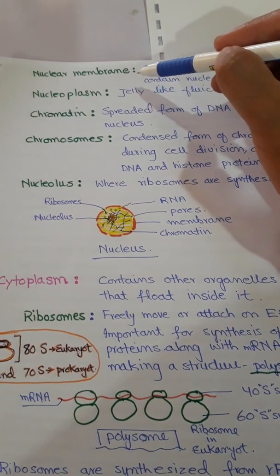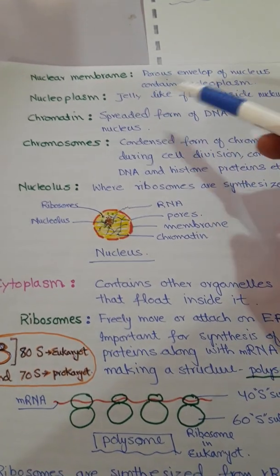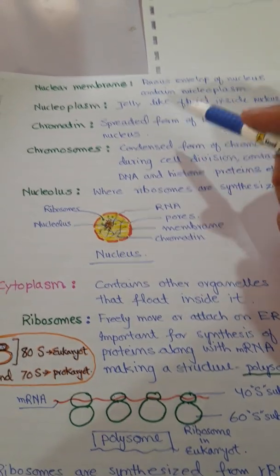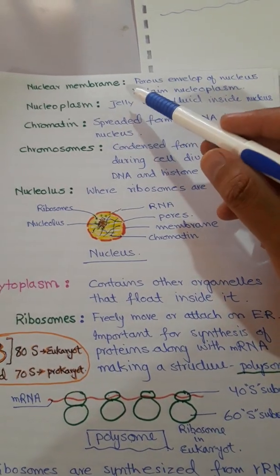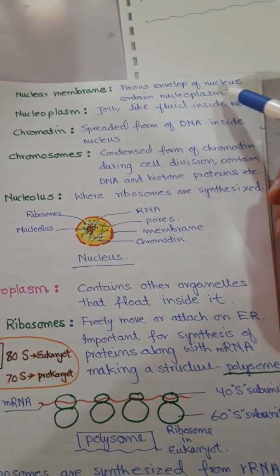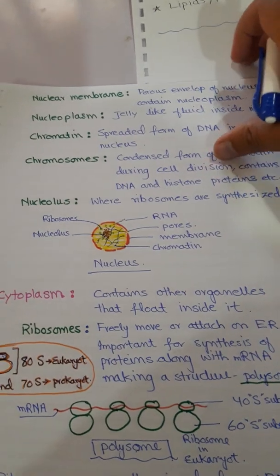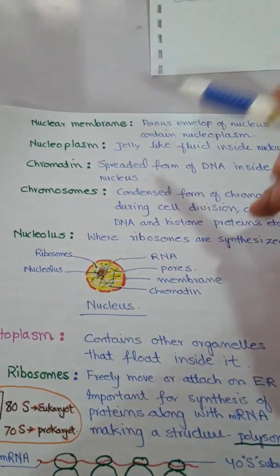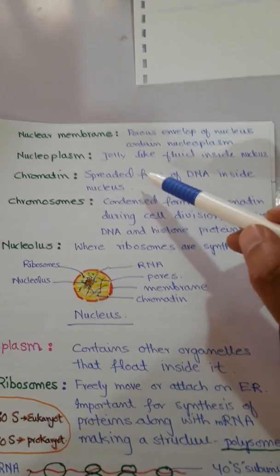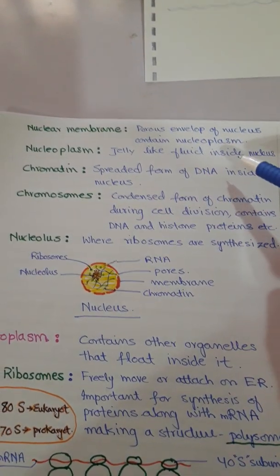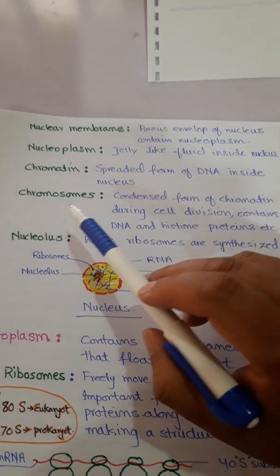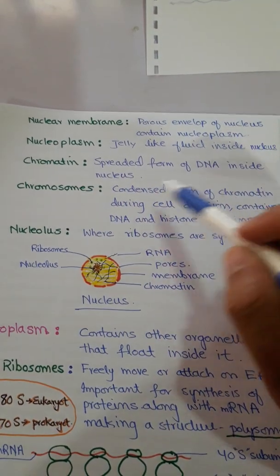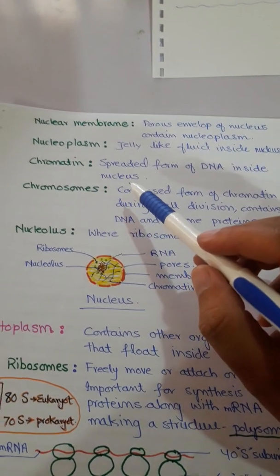The nucleus contains a nuclear membrane, which is a porous envelope that encloses the nucleoplasm. Nucleoplasm is the jelly-like fluid inside the nucleus, which contains chromatin material. Chromatin is the spread-out form of DNA inside the nucleus.